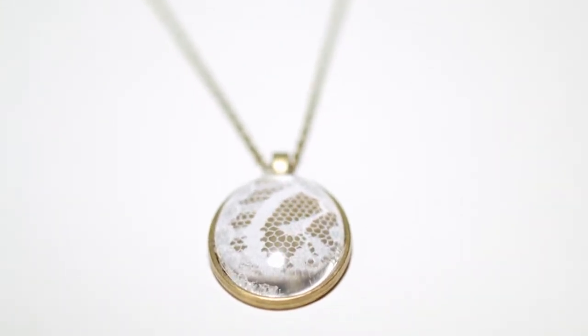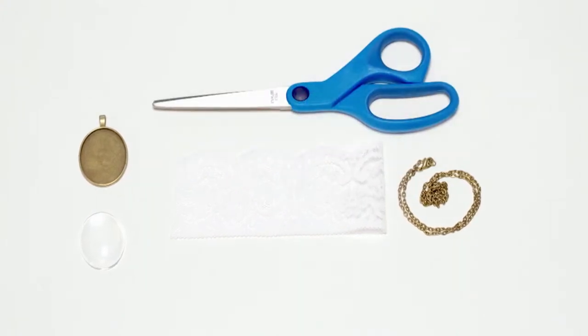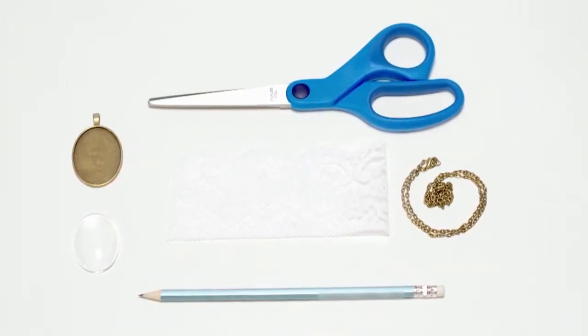To do this you will need a gold pendant tray, a glass cover, a gold chain, a piece of lace fabric, a pair of scissors, a pencil and fabric glue.